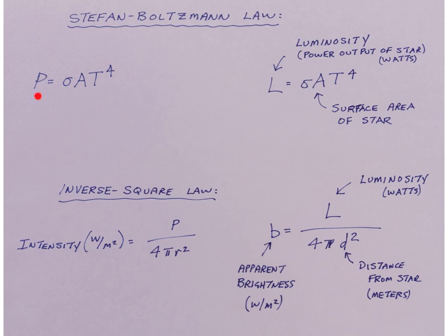Stefan-Boltzmann law we've seen before. An equation which is in your data booklet is the equation for calculating what's called the luminosity of the star. Luminosity is simply the power output of the star measured in watts. Capital L is the luminosity or power output of the star.